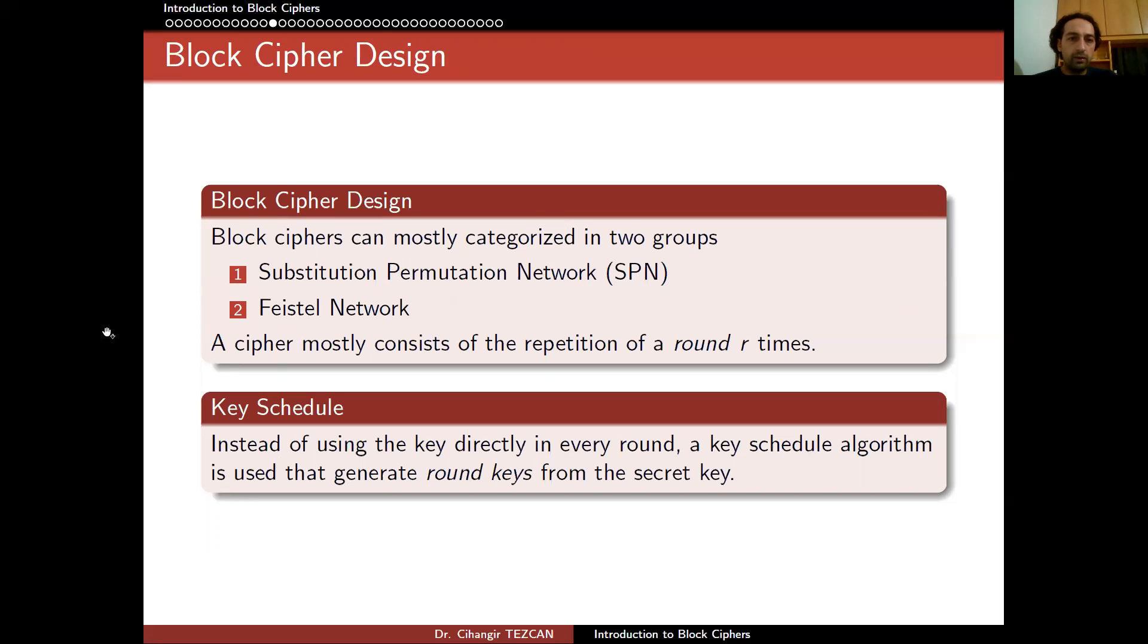So you can design a block cipher in many ways, but generally we group them in two, namely Substitution Permutation Network, shortly SPN, and Feistel Network. And instead of designing a very huge algorithm, which will be very complicated, we just choose to design a round function and repeat it many times. So that it will be easier to implement and also easier to analyze.